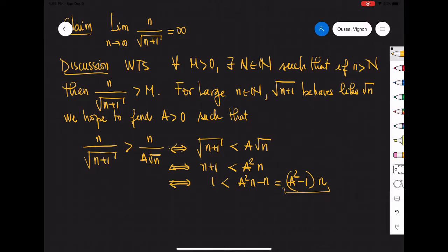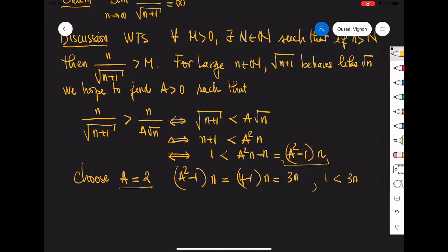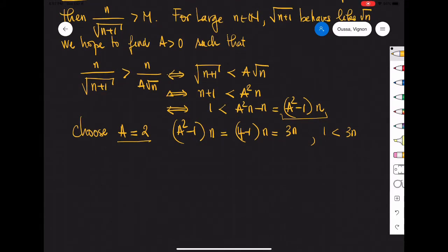So how do we choose a to make sure that this quantity is strictly bigger than 1? We may choose a to be, for example, 2. Because if we choose a to be 2, then (a squared minus 1) times n is (4 minus 1) times n, which is 3n, and we are sure that 1 is always less than 3n.